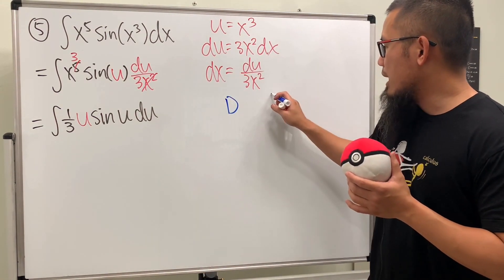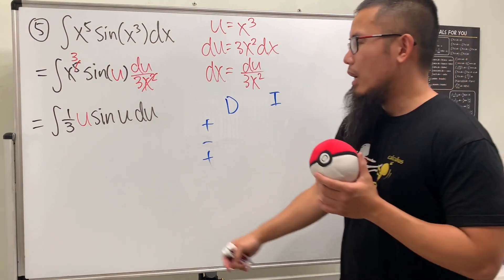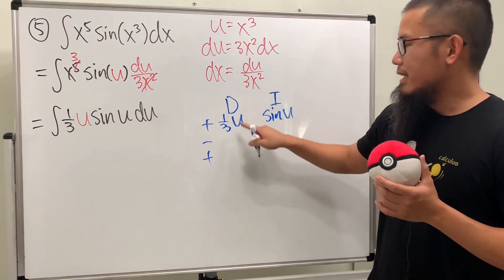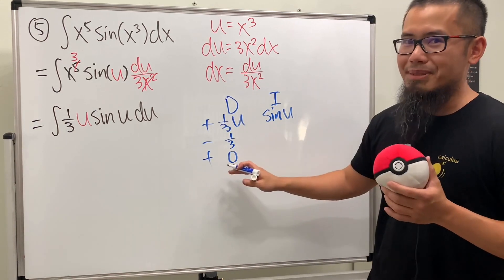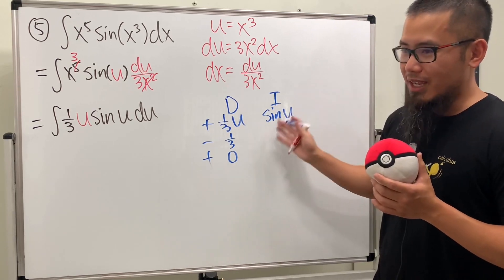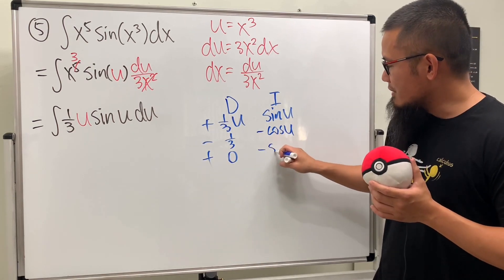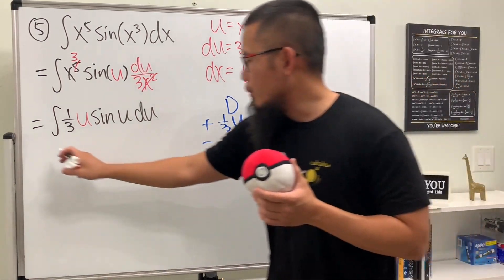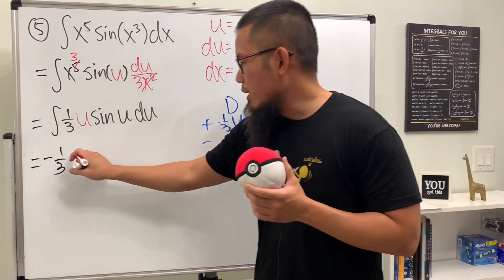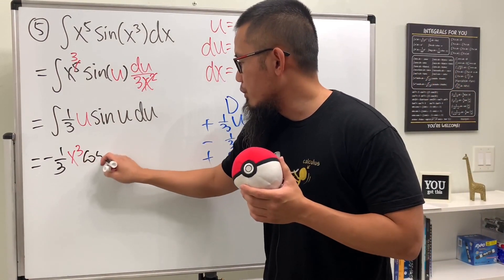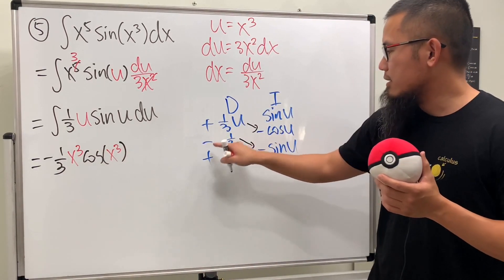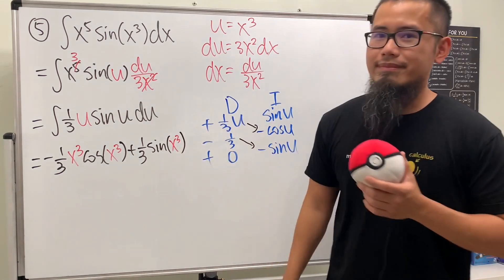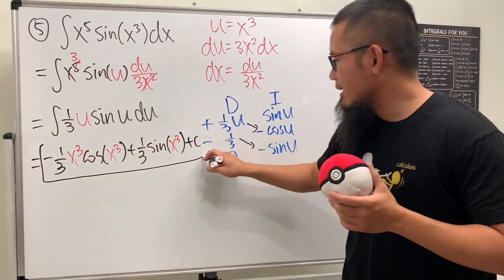Integration by parts with DI format: plus, minus, plus. We differentiate one third u and integrate sine u. Differentiating: one third, then zero — so we stop. Integrating sine u: first get negative cosine u, then negative sine u. This times this gives negative one third, and u is x to the third power, times cosine of x to the third power. Next, this times that is positive, giving one third sine of x to the third power. Put on the plus c — we're all done.